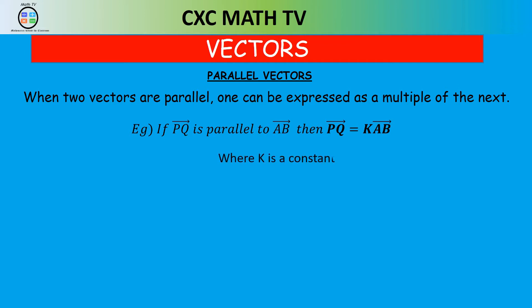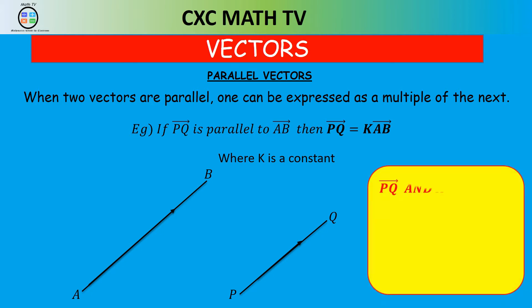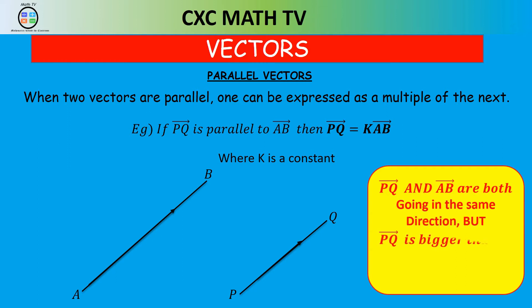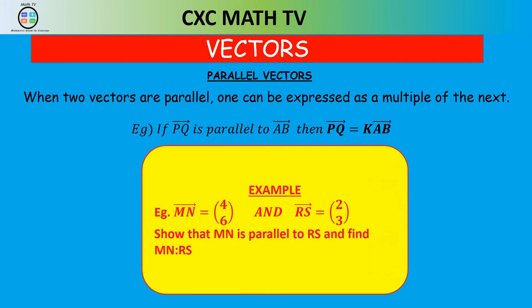Looking at these two diagrams, we see vector AB and vector PQ. You can see they're both going in the same direction, but vector AB is bigger. So we say PQ and AB are both going in the same direction but PQ is bigger than AB. Mathematically, we write vector PQ is equal to some constant times vector AB.